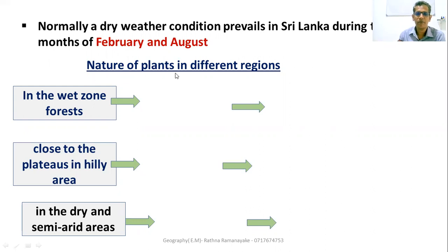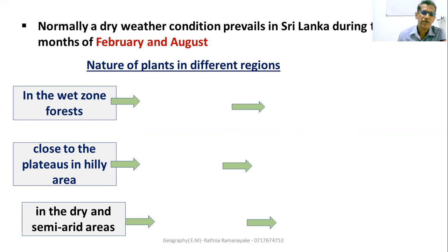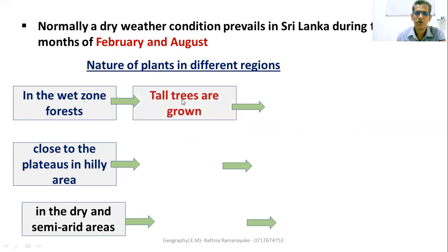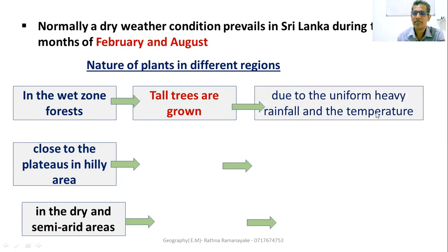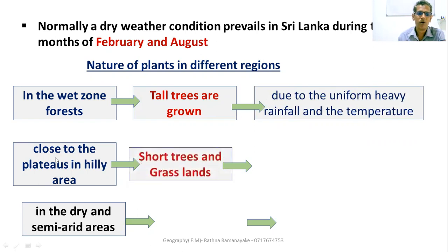Now I will pay attention to the nature of plants in different regions. There is a close relationship between the nature of plants and climate. In the wet zone forest, very tall trees can be seen — such as Sinharaja, Kanneliya, and Dediyagala — due to the uniform, heavy rainfall and temperature. Close to the plateaus in the hilly area, short trees and grasslands can be seen.